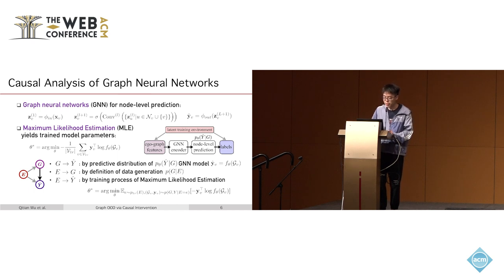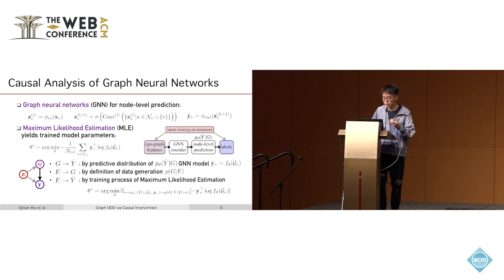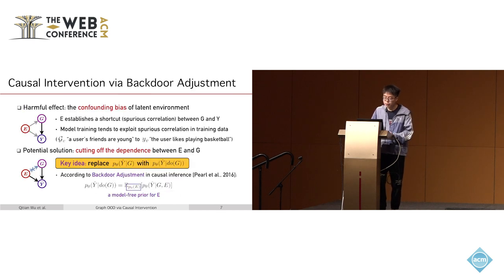The second dependence path goes from E to G, as the environment impacts the input graph distribution. The third path is implicit: model training impacts model parameters, and predictions depend on those parameters, creating a dependence from environment to predicted labels. Thus, environment E acts as a confounder, establishing a spurious correlation between G and ŷ that the model tends to exploit.